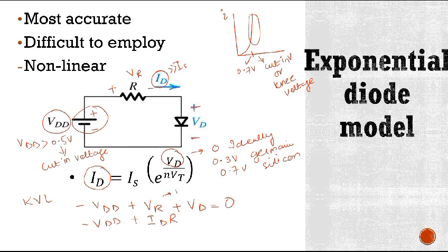We know that V is equal to IR. Here, this I is ID and R is R plus VD is equal to 0.